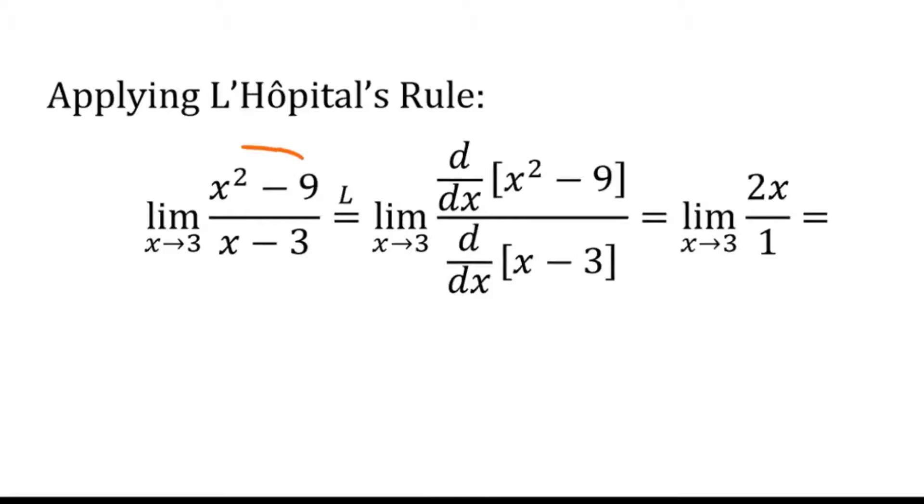Now I want to point out the only reason we're allowed to do L'Hôpital's rule is because this is going to 0 and this is going to 0. And I also want to point out that when we use L'Hôpital's rule, we're going to write a capital L over the equal sign to show that that's what we're doing.